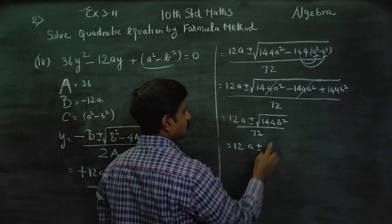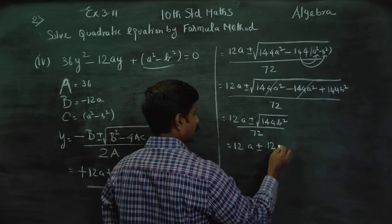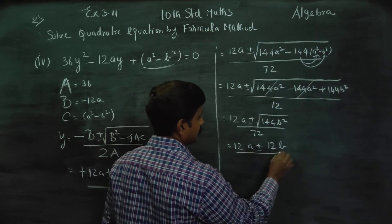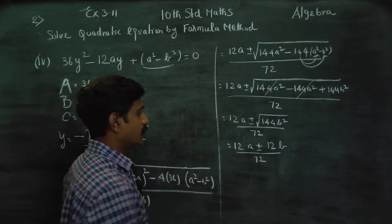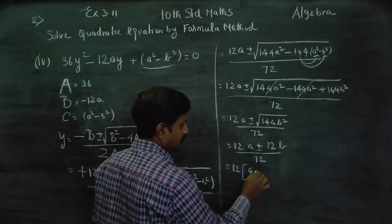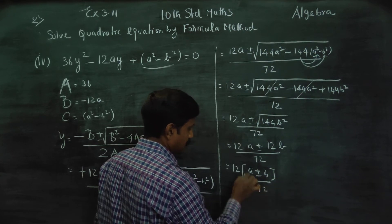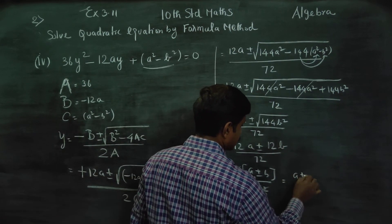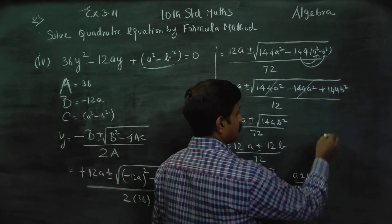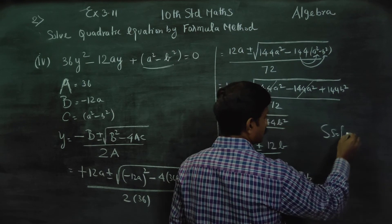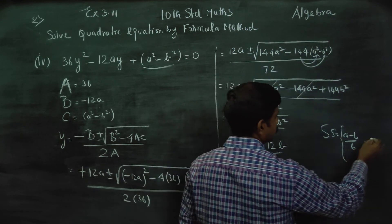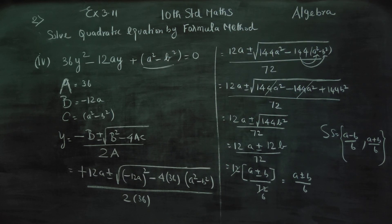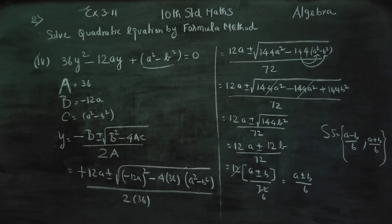12A plus or minus 12B, all divided by 72. Taking 12 as common factor, 12 into 6 is 72, so this simplifies to A plus or minus B divided by 6. Therefore your solution set will be A minus B over 6 and A plus B over 6. Thank you.